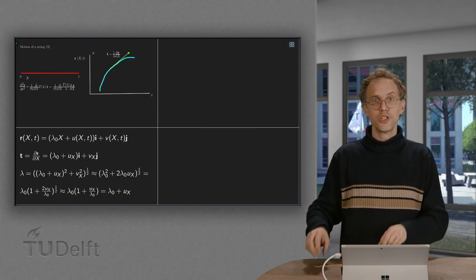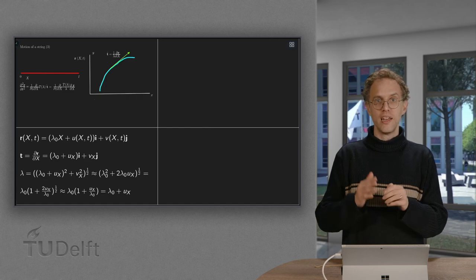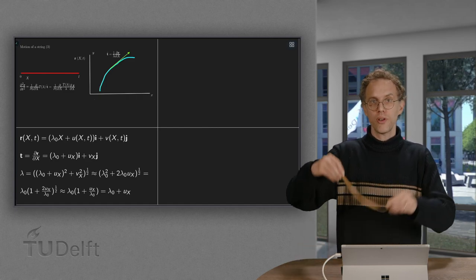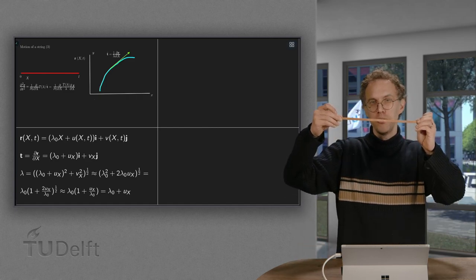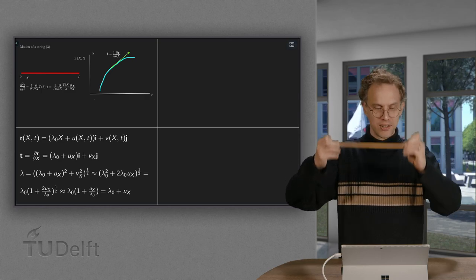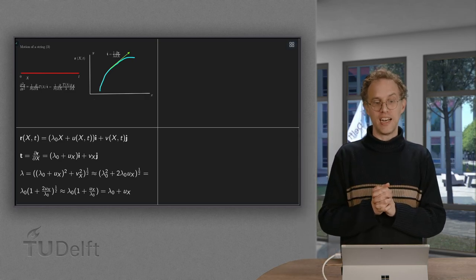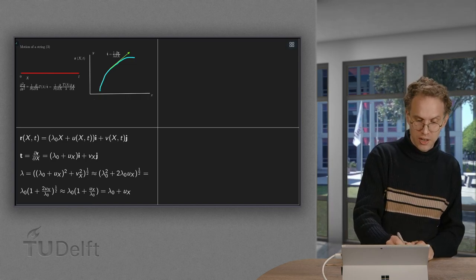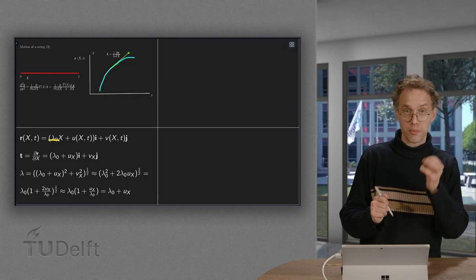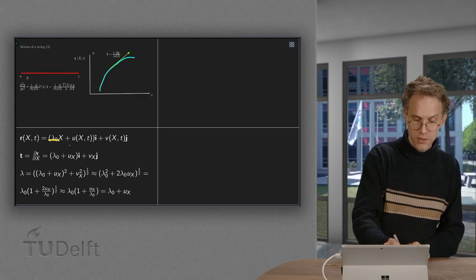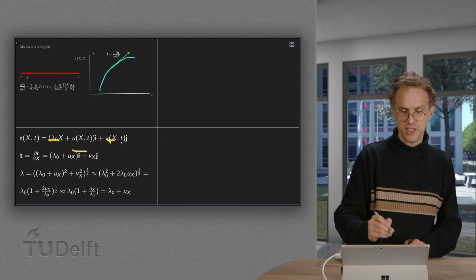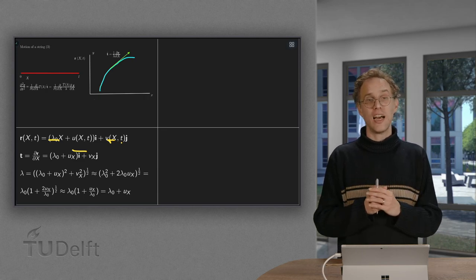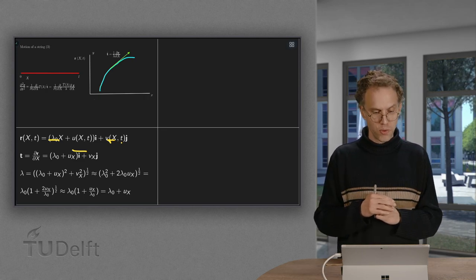And then we make a small u in the x direction. So first lambda 0 and then a very small u and a small v in the y direction. So our r of x and t looks as a lambda 0, where lambda 0 is constant times x, plus u in the i direction plus v in the j direction. So that's the idea. u and v are small.